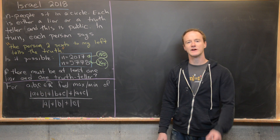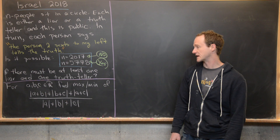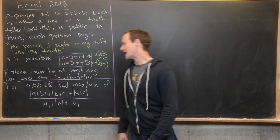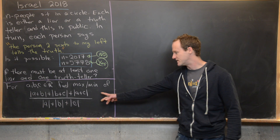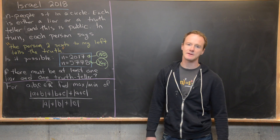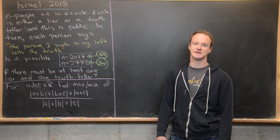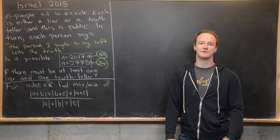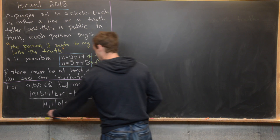Our next problem involves finding the maximum and minimum of a certain expression. For real numbers A, B, and C — not all zero — we want to find the maximum and minimum of the expression whose numerator is |A+B| + |B+C| + |A+C| and whose denominator is |A| + |B| + |C|.